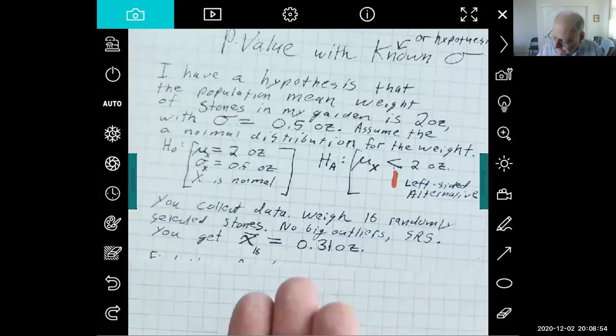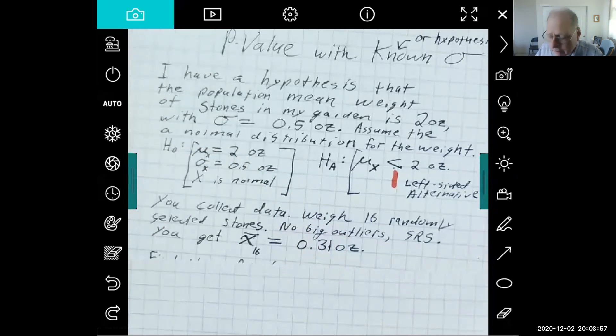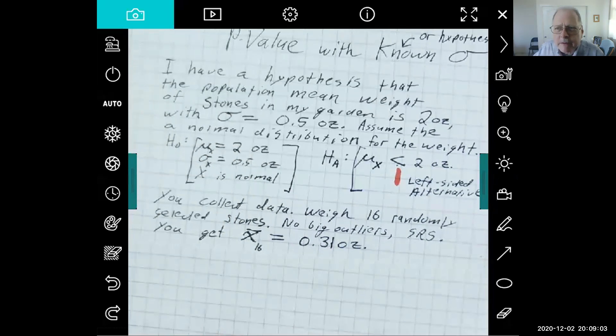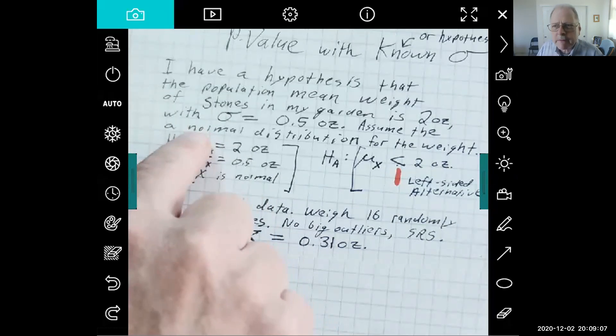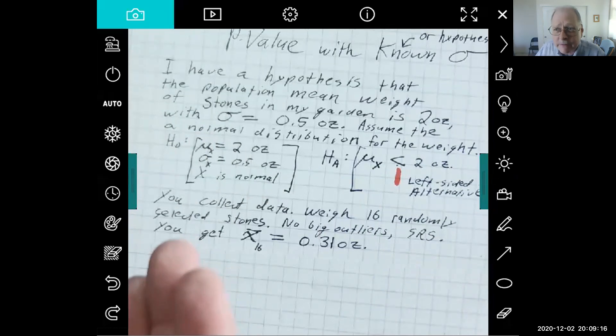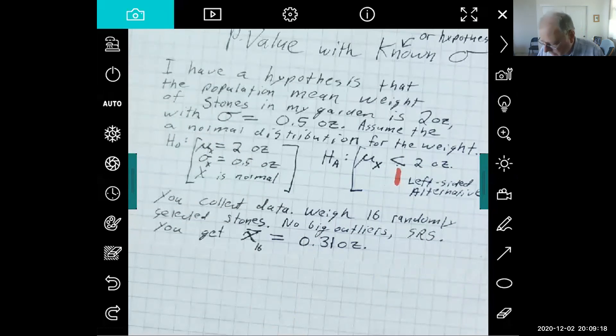But so that's evidence that I might be wrong about my null hypothesis. But the burden of proof is upon you, because I'm going to go on believing my null hypothesis unless you can convince me that it's not likely to be true.